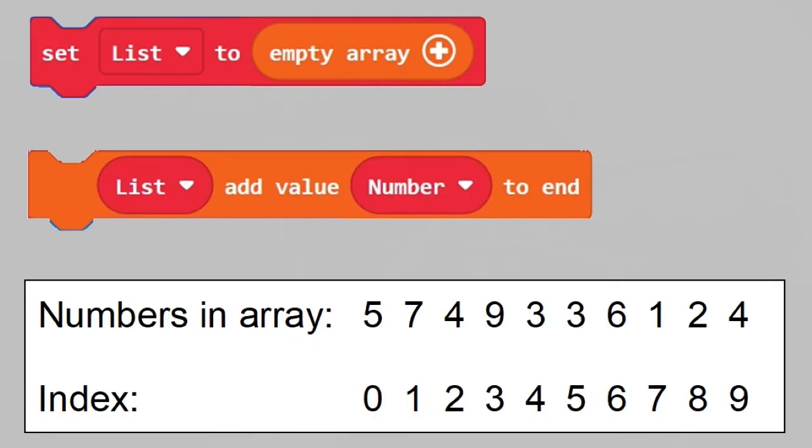We look at an example. An empty array has been created here. Here is a set of data, some random numbers, which have been given indexes from 0 to 9. The data with the index 3 has the value 9.